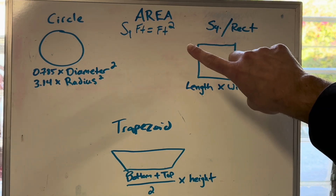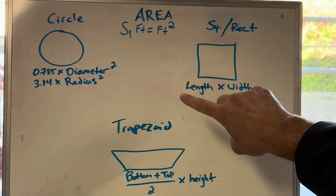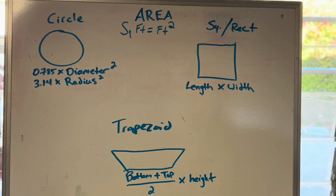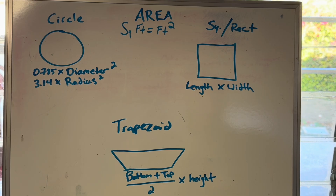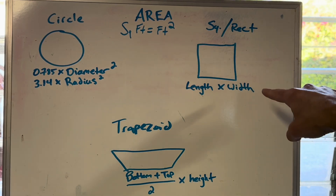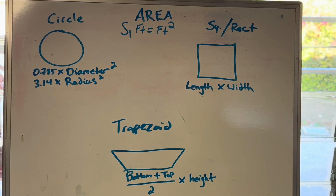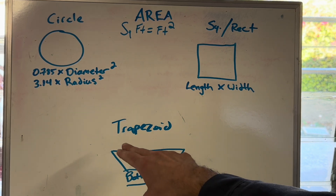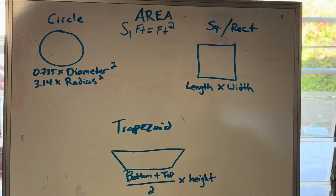Here's a brief overview of the equations. To find surface area on a circle, it's 0.785 times diameter squared, or 3.14 times radius squared — you may have heard this as pi r squared. To find area on a square or rectangle, you multiply length and width, or length and height — just two dimensions. For a trapezoid, it's bottom plus top divided by two, multiplied by the height. We'll go through each one of these and explain them in greater detail. Let's start with the circle.